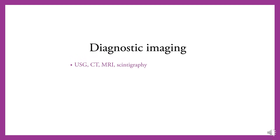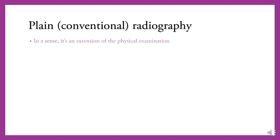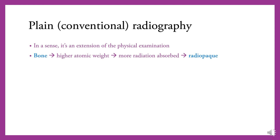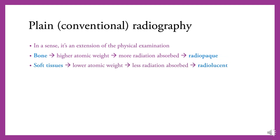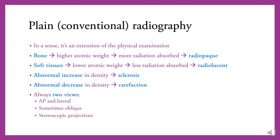Diagnostic imaging includes ultrasonography, CT, MRI, and CT arthrography. Conventional radiograph is still the most widely used and is essentially an extension of the physical examination. Bone, having higher atomic weight, absorbs more radiation and appears opaque, whereas soft tissue absorbs less radiation and appears more lucent. Abnormal increase in density is a sign of sclerosis; abnormal decrease is a sign of rarefaction. Always view from two projections: AP and lateral, sometimes oblique, and also stereoscopic projections.